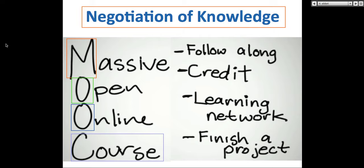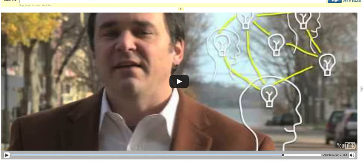If you're a student in a MOOC, you have several options: you can follow along and do absolutely nothing; you can do a MOOC for credit, in which case you do have to complete things and sometimes pay; you may want to be part of the learning network and just connect with people; or you may want to finish a project — which is exactly what Dave Cormier mentions.